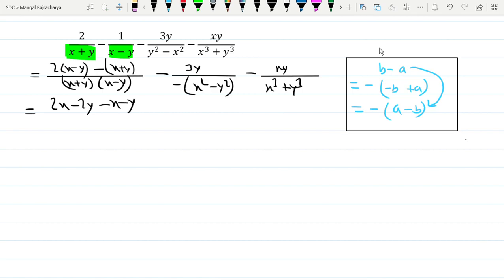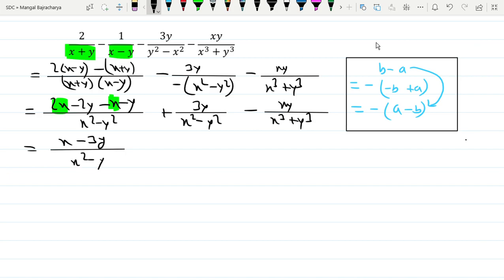...x² minus y² using this and minus xy divided by x³ plus y³ as it is. Now, 2x minus x gives x, and minus 2y minus 2y minus 2y is 0, so minus 3y. And x² minus y², so this is the same charge. I mean plus 3y divided by...